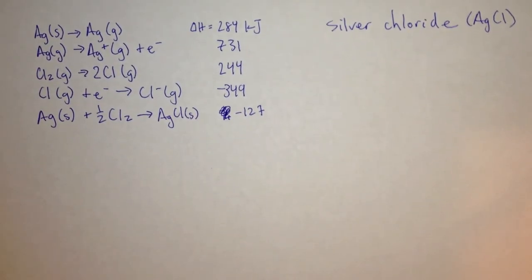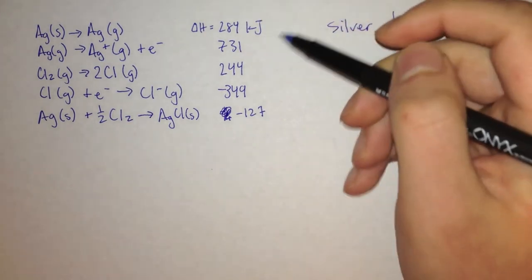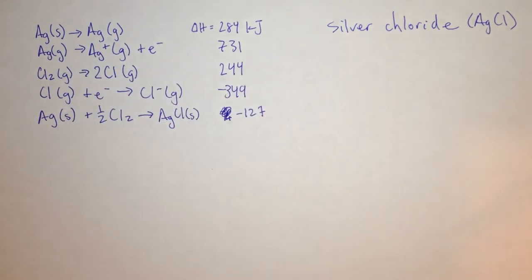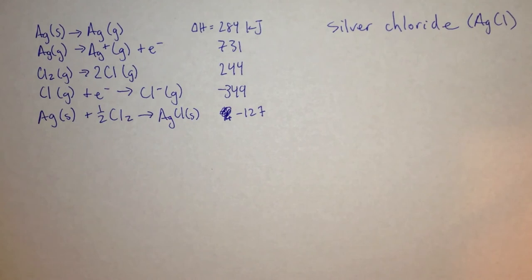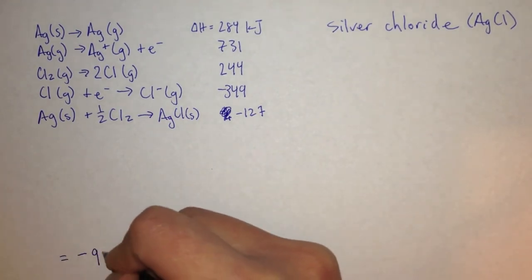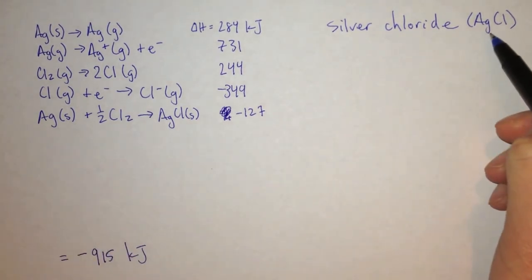Now let's look at the last problem — solving the lattice energy of silver chloride. On the left, we have given values for the heat of some reactions. If you press pause now, you can solve it, then hit play again to check your answer. The correct answer is negative 915 kilojoules for the lattice energy of silver chloride.